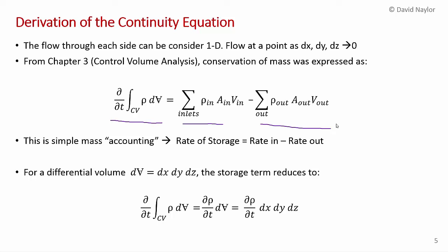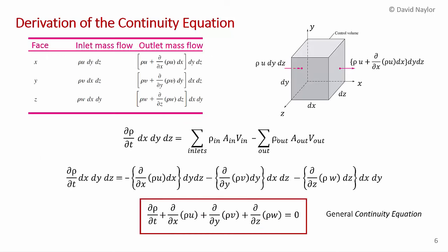Now I need to talk about the storage term. This storage term was derived for a finite-size control volume, but here we're doing analysis on a differential volume that we're going to let shrink to zero. As in calculus, properties are constant over the differential volume as it shrinks. So we don't need to perform integration — we can express this as ∂ρ/∂t times the incremental volume dx dy dz. That's our storage term: the partial derivative of density times the incremental volume.